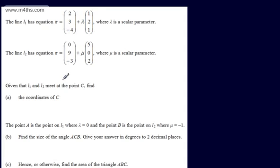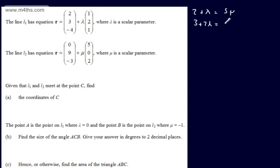Given that L1 and L2 meet at point C, find the coordinates of C. We set each component equal. For the i-components: 2 + λ = 5μ (equation 1). For the j-components: 3 + 2λ = 9 (equation 2). For the k-components: -4 + λ = -3 + 2μ (equation 3).